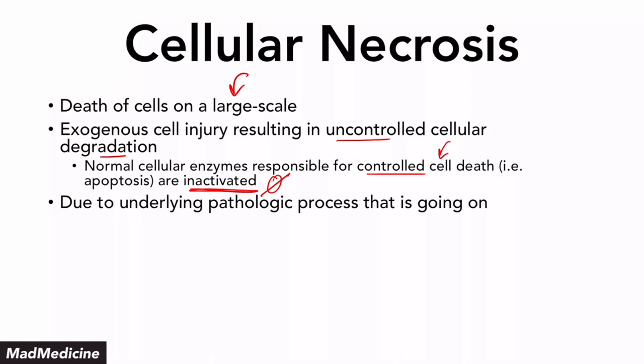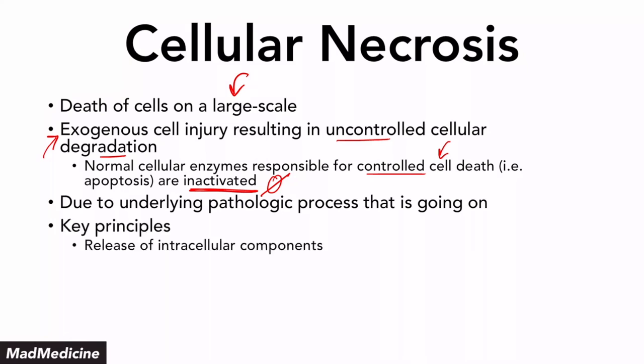This is going to be due to some underlying pathologic condition. For example, if you think about a thrombus forming, it's going to cause ischemia. It's not the actual thrombus that's causing a large scale die-off of cells — it's actually the ischemia. That ischemia is a pathologic process leading to the exogenous injury. The key principle to remember is that when this damage occurs, the cells are going to end up breaking and releasing their intracellular components. You have an exogenous injury occurring, these cells get lysed or broken up and opened up, and their intracellular components will get released.